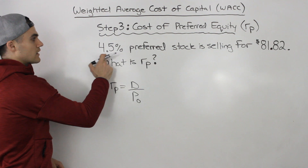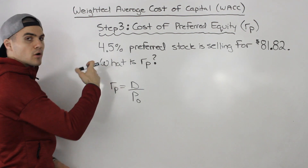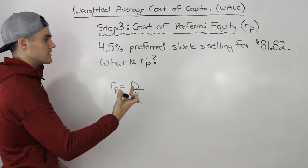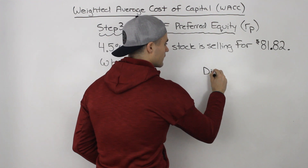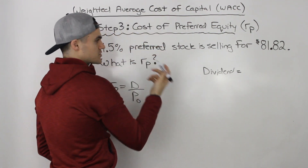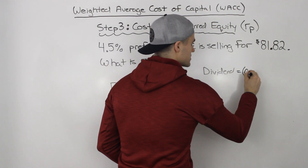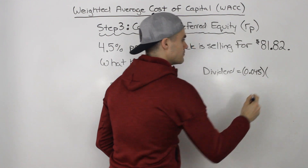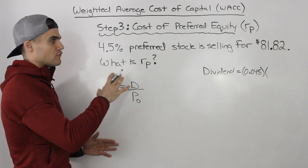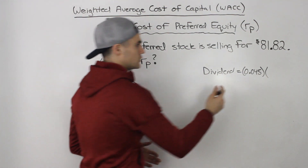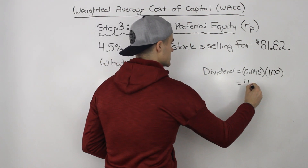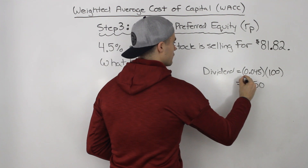They did give us the percentage of the par value, and that percentage represents what the dividend is going to be. So we know the dividend on this preferred share is four-and-a-half percent, which is 0.045, multiplied by the par value of preferred stock. Since par value is not given in the question, we assume it's $100. So 0.045 times $100 gives us a dividend of $4.50.